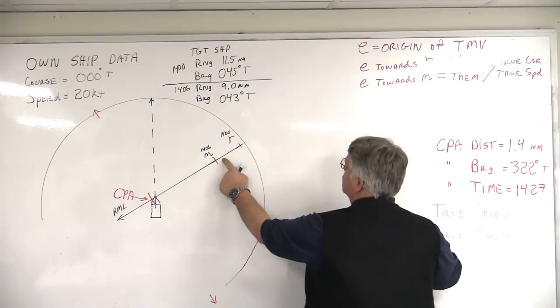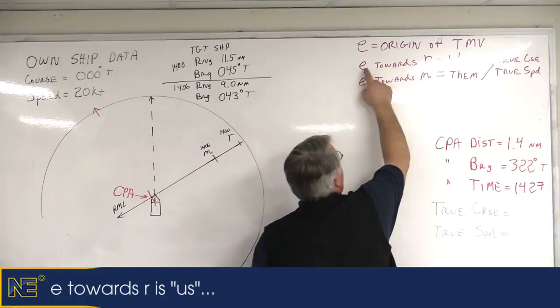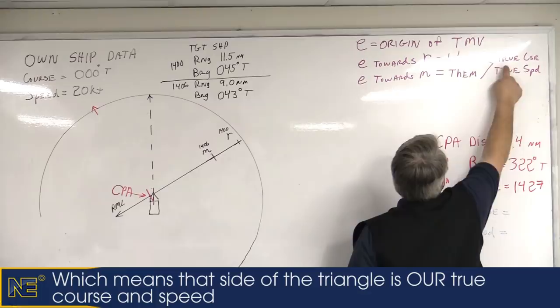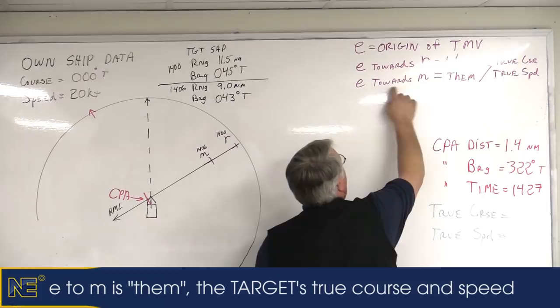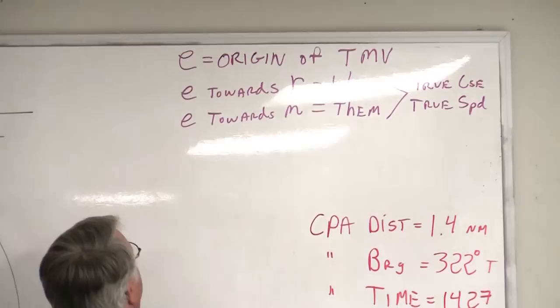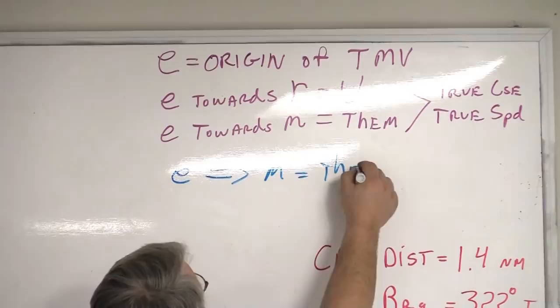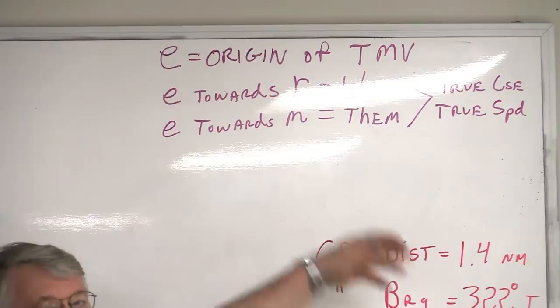We have one side of the triangle, which was the relative motion side. The other two sides: E towards R is us, meaning that side represents our true course and true speed. The third side is E towards M — or them — which is the target ship's true course and true speed. I purposely use the word 'towards' because it really establishes a sense of direction and reinforces the concept that these are true motion vectors.